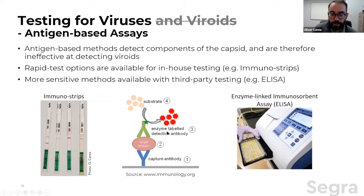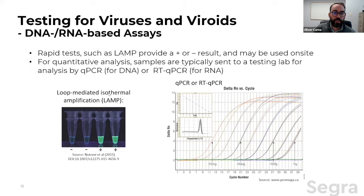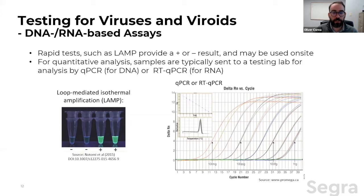On the DNA and RNA-based assay side, loop-mediated isothermal amplification (LAMP) is an in-house option for a quick yes/no answer. It doesn't need fancy equipment — just a heat block at a steady temperature — and serves as a first-pass indicator directing your response. For more quantitative analysis, it's typically necessary to send samples to a laboratory for qPCR for DNA, or reverse transcriptase qPCR for RNA. These methods can detect very small amounts of virus or viroid, down to the picogram or even femtogram scale.